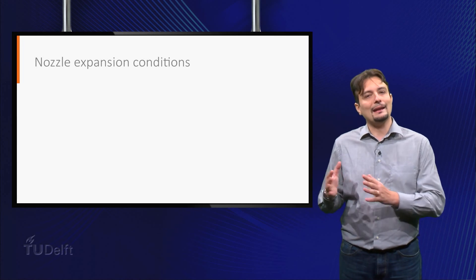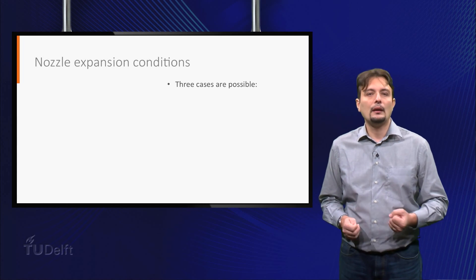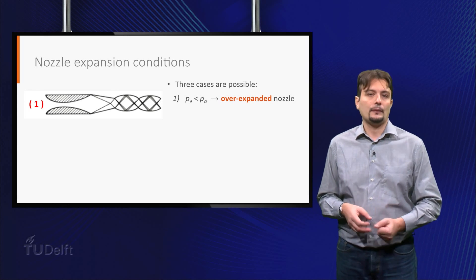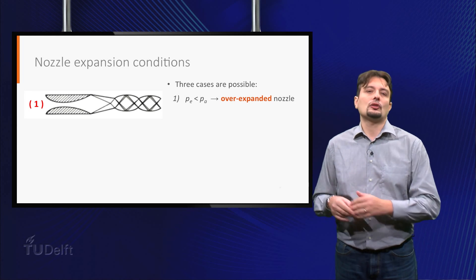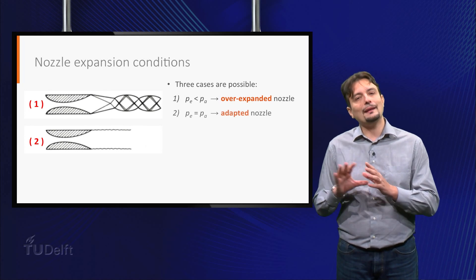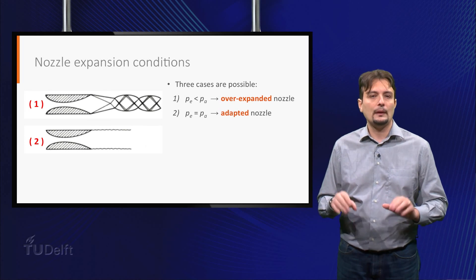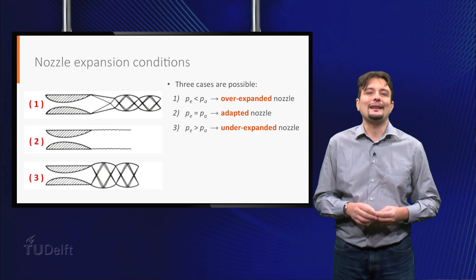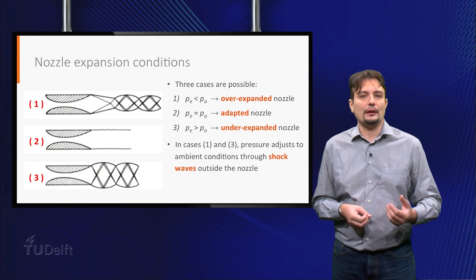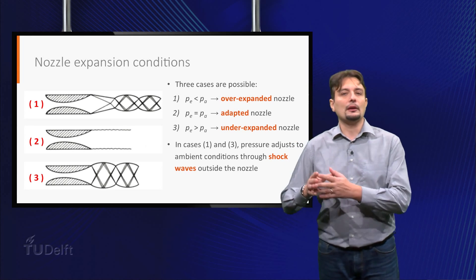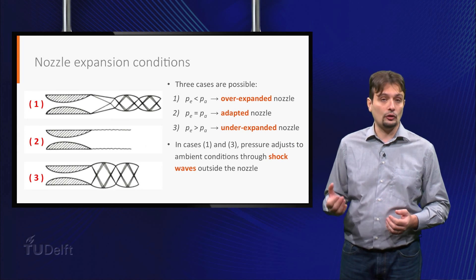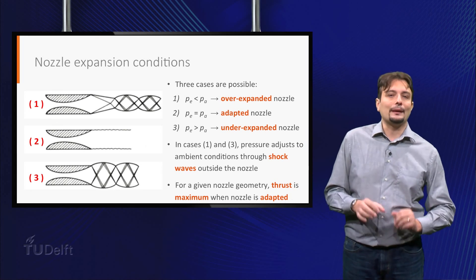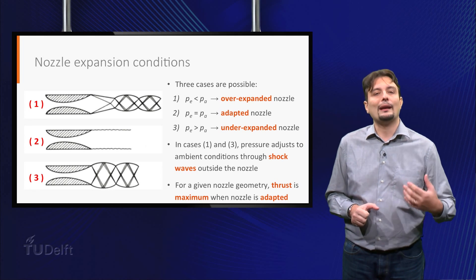However, this nozzle can work under different conditions, depending on the altitude and thus the ambient pressure. Three different cases are possible. When the exit pressure is lower than the ambient pressure, we have an over-expanded nozzle, since the flow has been expanded too much with respect to the external ambient conditions. When the exit pressure is exactly the same as the ambient pressure, the nozzle is adapted. Finally, when the exit pressure is higher than the ambient pressure, the nozzle is under-expanded. If the exit pressure is different from the ambient pressure, the flow adjusts to ambient conditions by means of a set of shock waves immediately after the nozzle. It is possible to show that, for a given nozzle geometry, the thrust is maximum at the particular altitude and ambient pressure conditions where the nozzle is adapted.